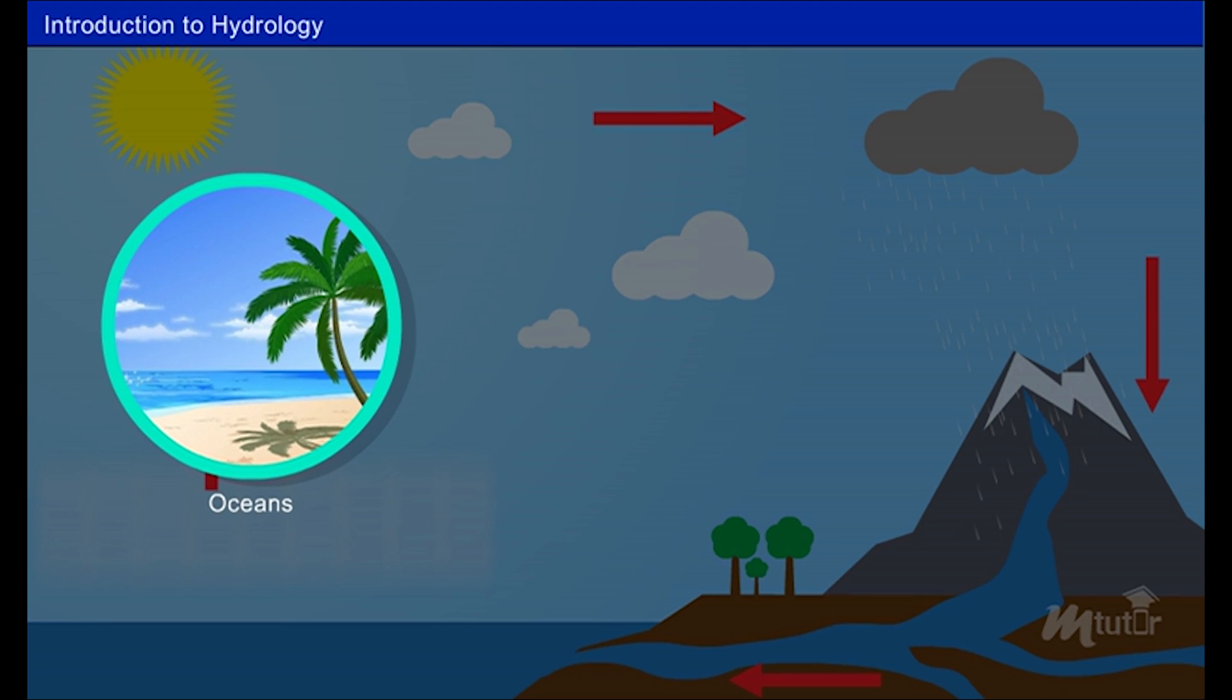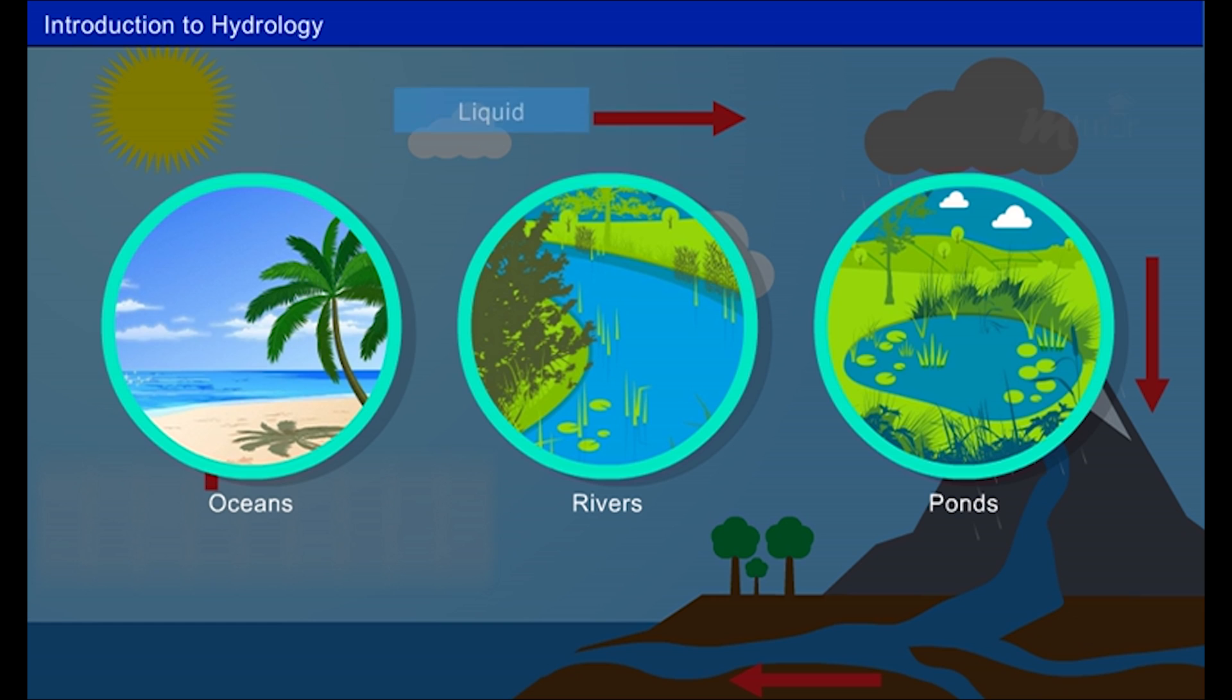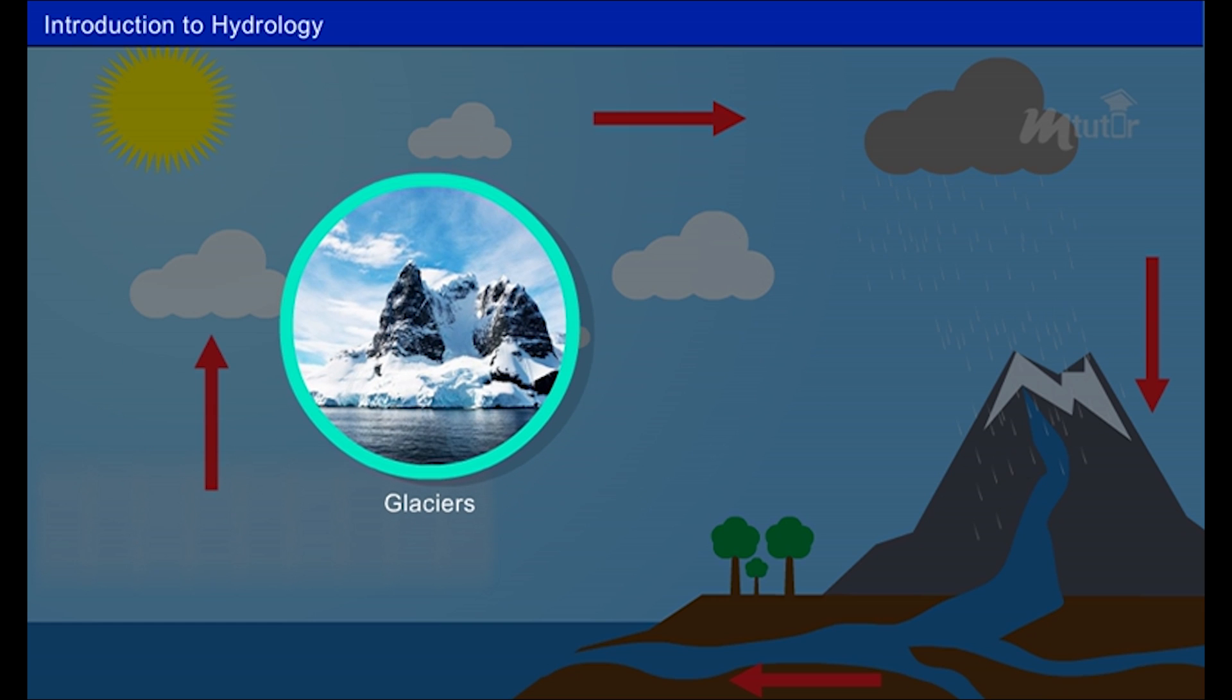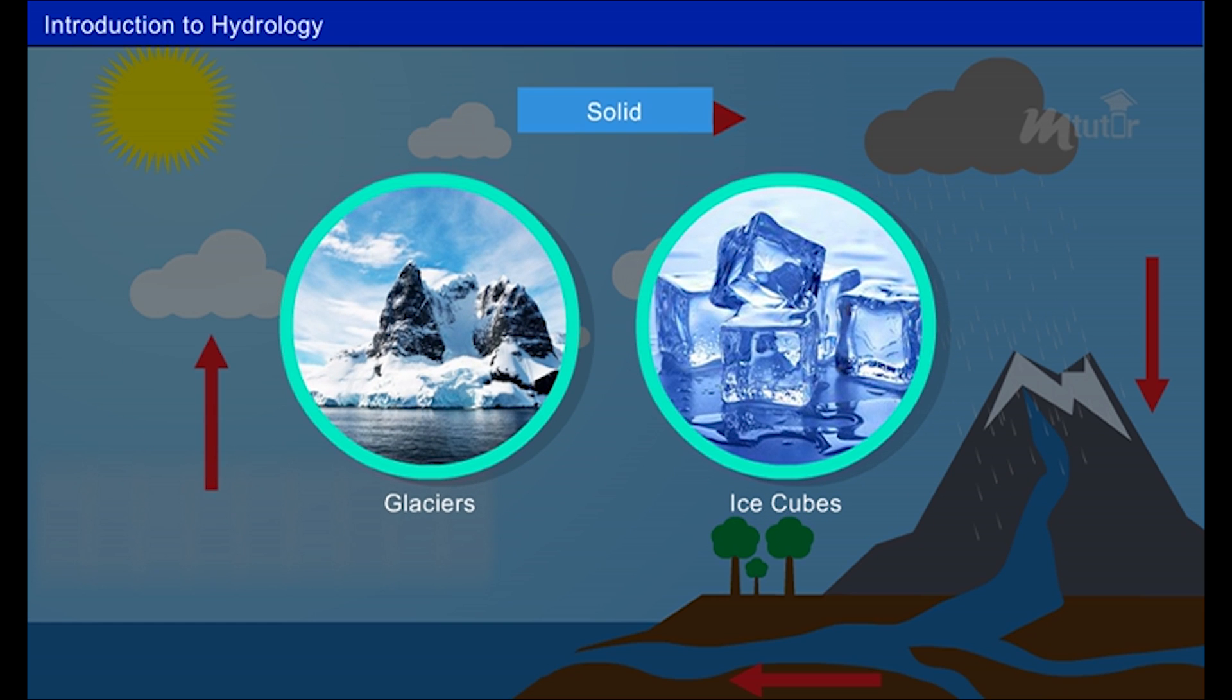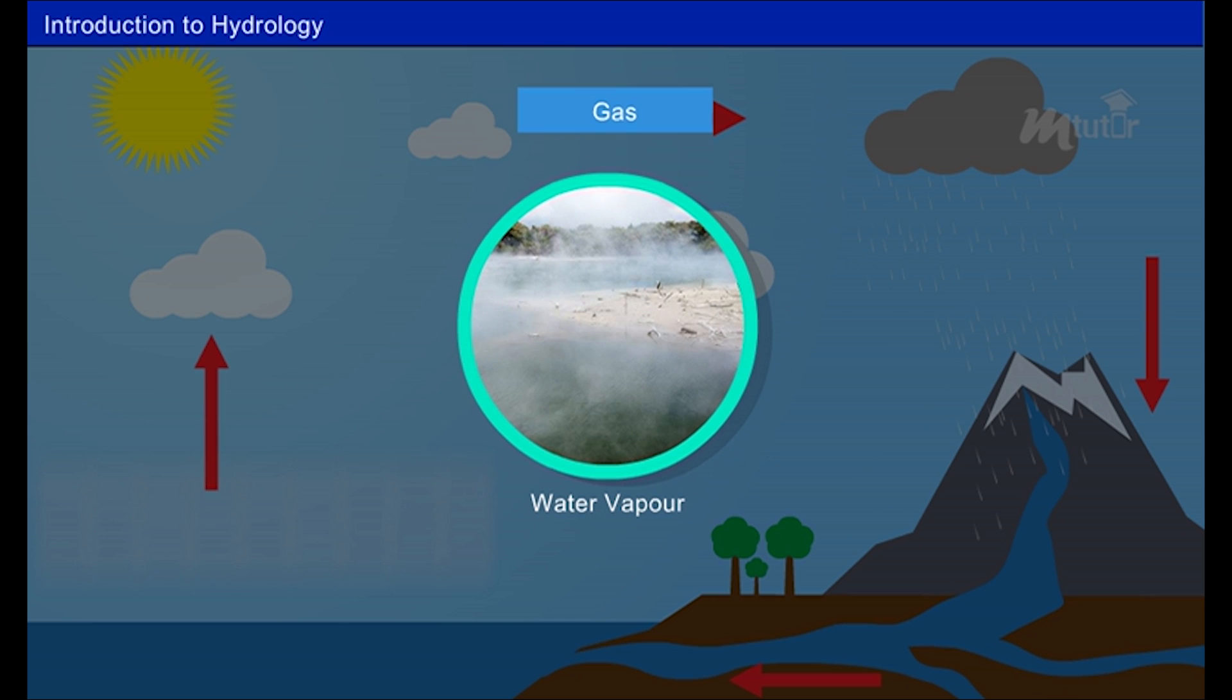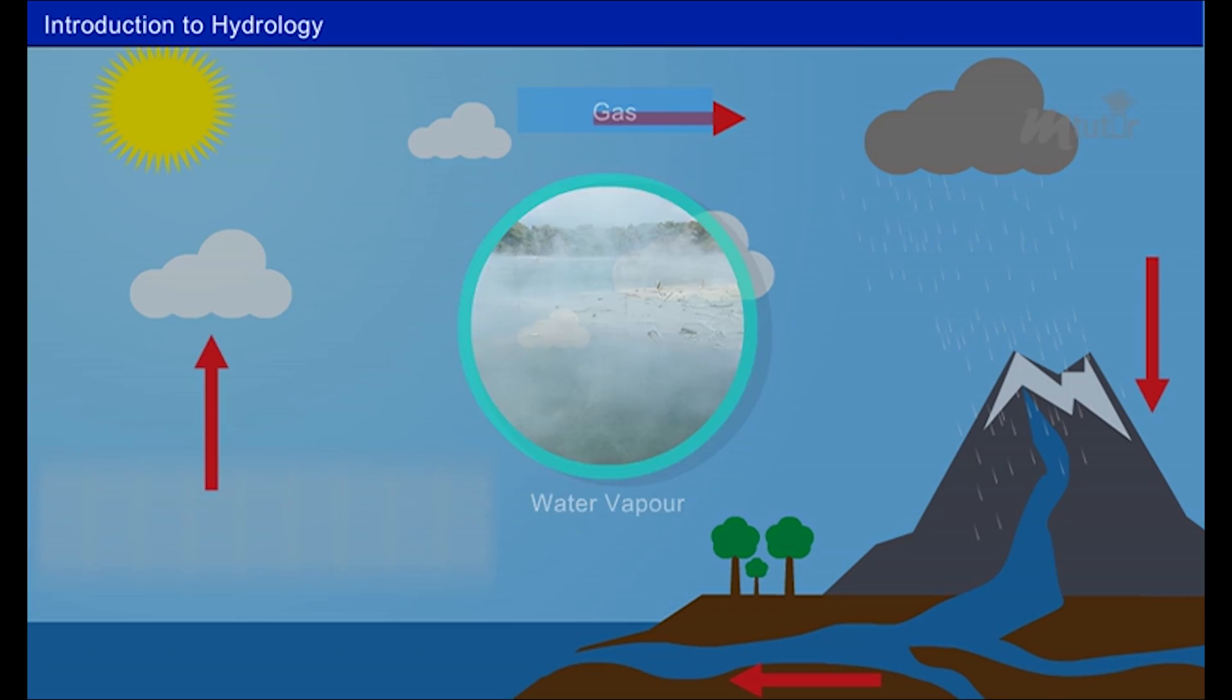That is, oceans, rivers, ponds in the form of liquid. Glaciers, ice cubes in solid form. And in the water vapour in gaseous form.